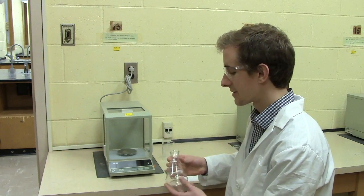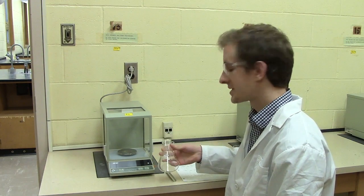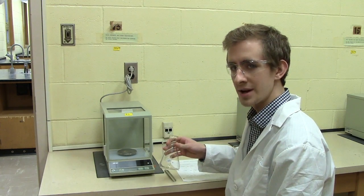You don't want to exceed the maximum load of the balance itself, so using Erlenmeyer flasks such as the 250 milliliter would be too much as it weighs over 120 grams in itself.